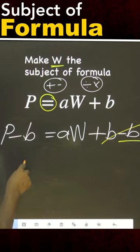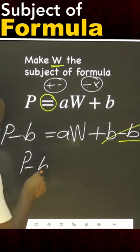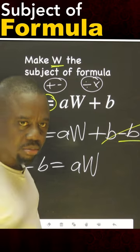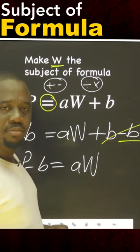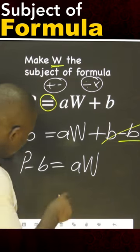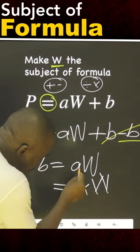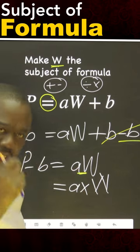So with this now, we have P minus B equals to A W. W is not still alone. W has somebody with it. We say, A multiplied by W. That is the meaning. We know that between them, there is multiplication.